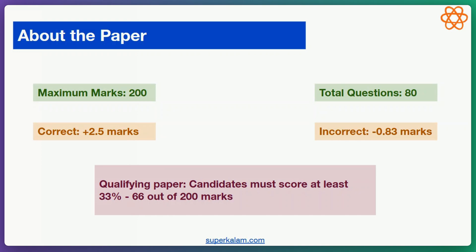Let's have a look at the various facets of the paper. The maximum marks is 200, similar to the GS1 paper. The total questions are 80, not 100. A correct answer will fetch you 2.5 marks and an incorrect answer will get you minus 0.83 marks — so 0.83 marks will be deducted from your score.